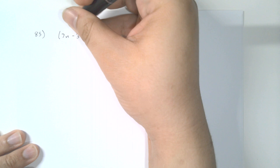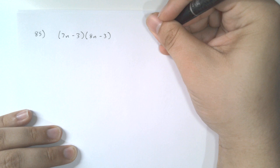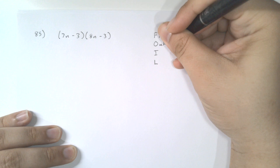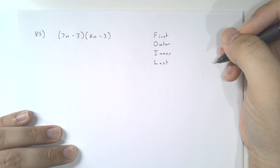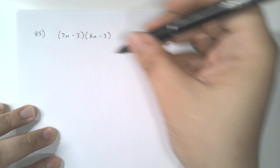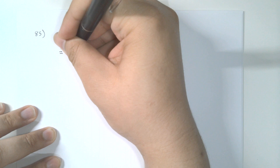For number 85 we have 7n minus 3 times 8n minus 3. Before you took my class you probably learned the FOIL method to multiply polynomials, and there's nothing wrong with it. FOIL stands for First, Outer, Inner, Last — it's the way I first learned to multiply polynomials in Algebra 2. We multiply the first two terms: 7n times 8n gives us 56n squared.